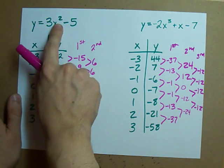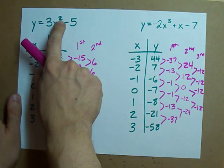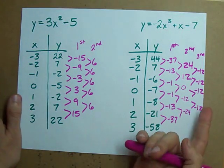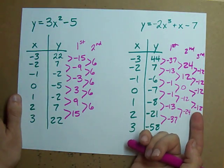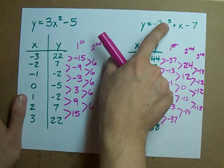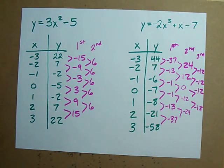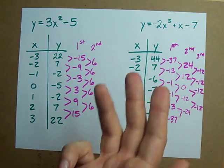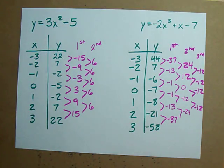I expected the third differences to be the same here because it was of degree 3, it was a cubic equation. And I happen to know that if the first differences are constant in a table of values, then the equation used to get that table of values was degree 1.